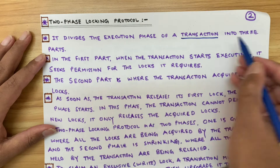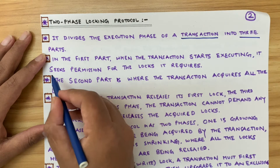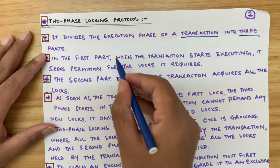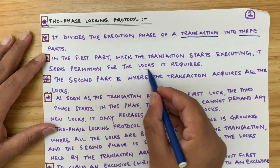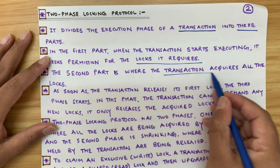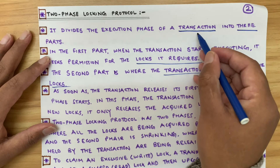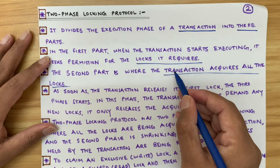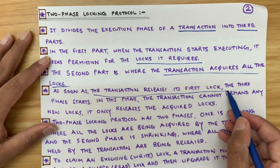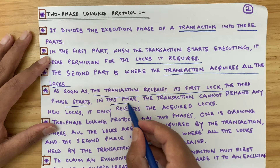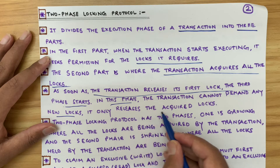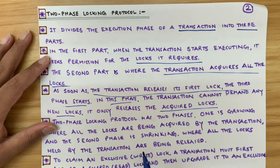Two-phase locking protocol divides the execution phase of a transaction into three parts. In the first part, it seeks permission for the locks it requires. In the second part, the transaction acquires all the locks. In the third part, as soon as the transaction releases its first lock, the third phase starts — in this phase the transaction cannot demand any new locks; it only releases the acquired locks.